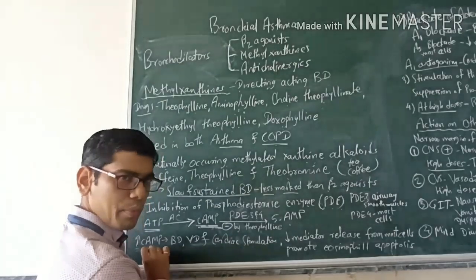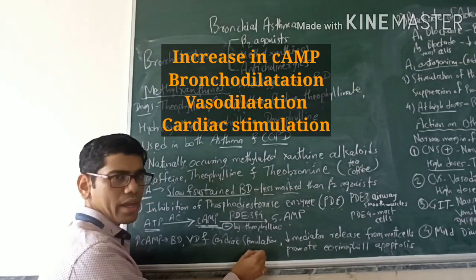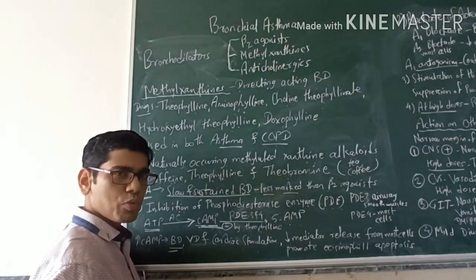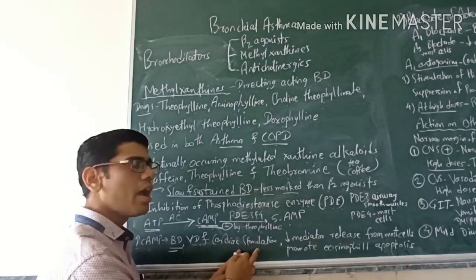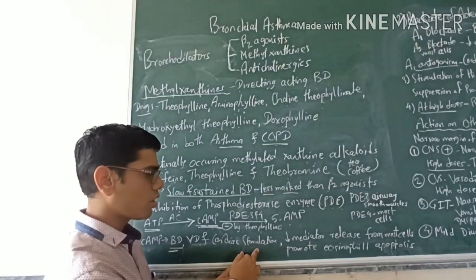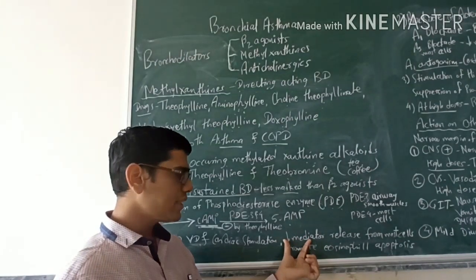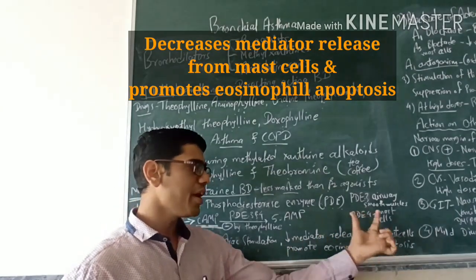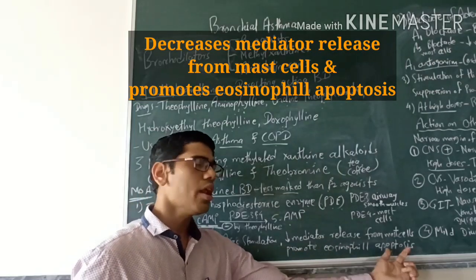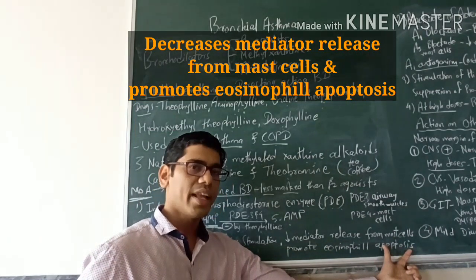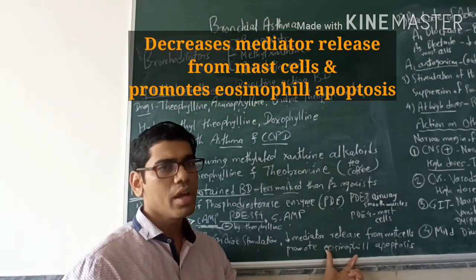Increased cyclic AMP produces three effects: bronchodilation, vasodilation, and cardiac stimulation. Bronchodilation is useful in asthma, but vasodilation can produce hypotension and reflex tachycardia, and cardiac stimulation can be detrimental for certain patients. Apart from this, increased cyclic AMP also decreases the release of inflammatory mediators from mast cells and promotes eosinophil apoptosis, meaning programmed cell death — so eosinophil numbers will be decreased.